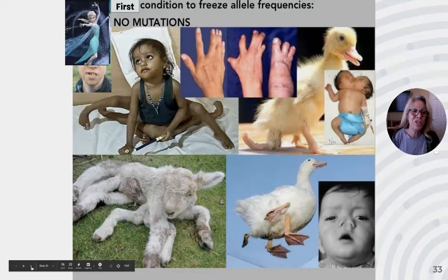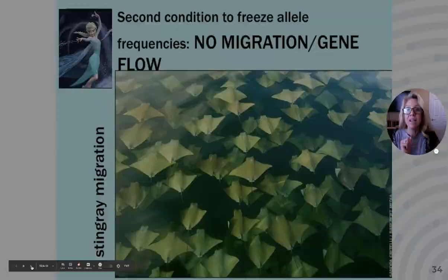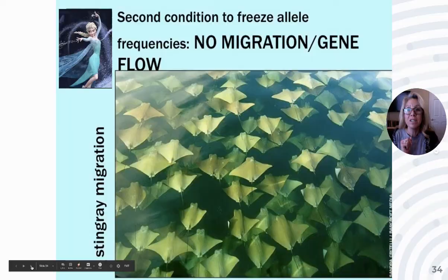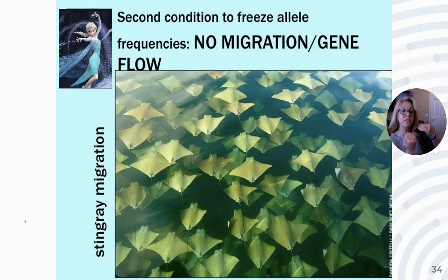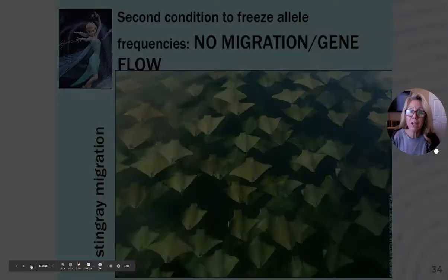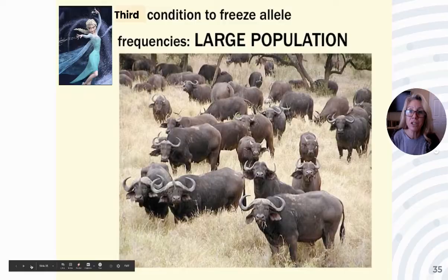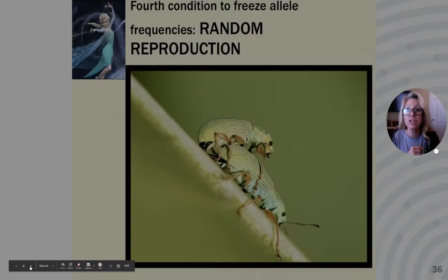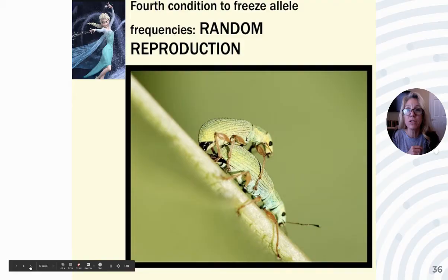The Hardy-Weinberg principle only applies if the population remains unchanging, and to ensure that, five conditions must be met. First: no mutations. Second: no migration — no influx of new alleles and nobody leaves your population. Third: you would always have to have a large population, because small populations are susceptible to genetic drift.